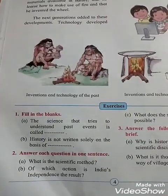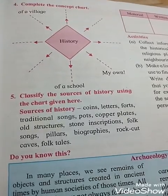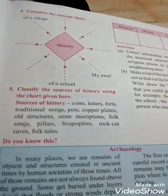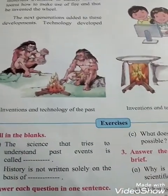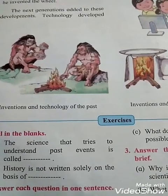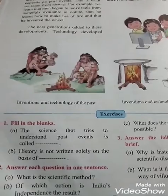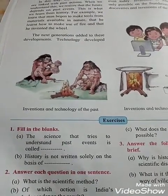Now for the exercise: Question 1 — fill in the blanks. Question 2 — answer each question in one sentence. Question 4 — complete the concept chart. Question 5 — classify the sources of history using the chart given. All these are your homework — do them in your notebook and read this lesson twice. I hope you understood this lesson. Thank you.